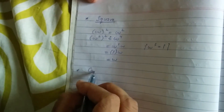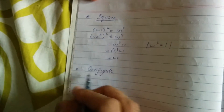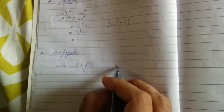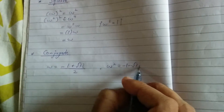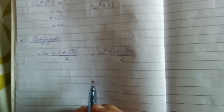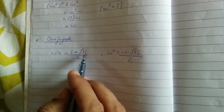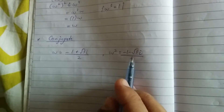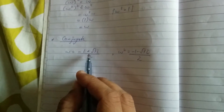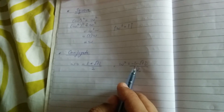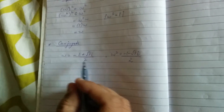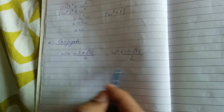They are also conjugates of each other. Omega has the value minus 1 plus under root 3 iota upon 2. The conjugate of a number means if a number has a plus with the imaginary part, its conjugate will have a minus sign. So since omega square has the imaginary value minus root 3 iota, the conjugate of omega square will have plus root 3 iota. Therefore omega and omega square are conjugates of each other.